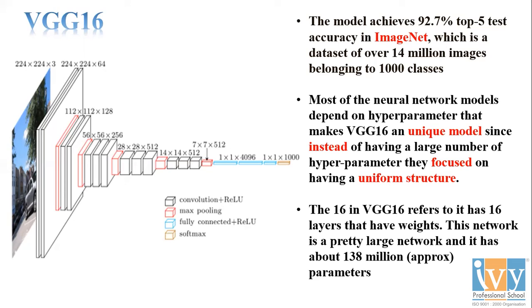Most neural network models depend on hyperparameters. Remember I mentioned 'a few' layers in the simple CNN model rather than a specific number? That's because we can't define the number until we know the optimum level — that's what hyperparameter tuning determines. It covers how many neurons, how many layers, and what learning rates to use.